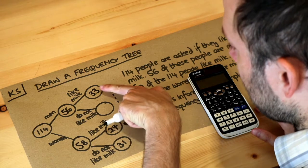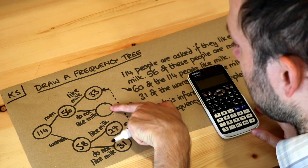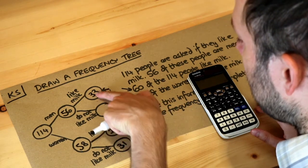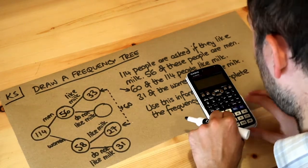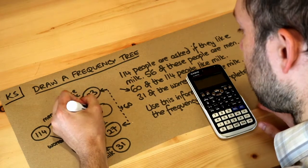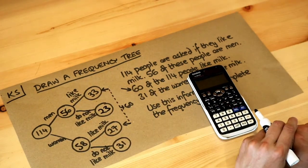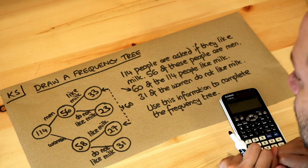And then because we know that the men who like milk plus the men who do not like milk, these two numbers have to add up to the number on the left, the 56, we can do 56 minus 33, which is 23. And that is the final completed frequency tree.